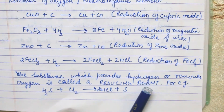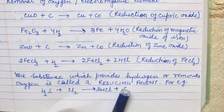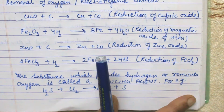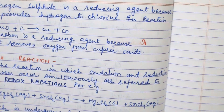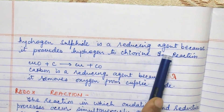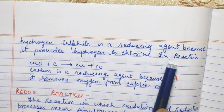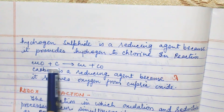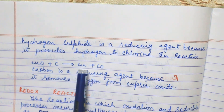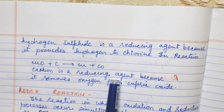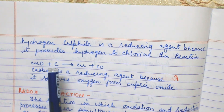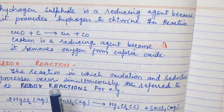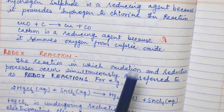The substance which provides hydrogen or removes oxygen is called a reducing agent. For example, H2S and Cl2 give 2HCl and S — hydrogen sulfide is a reducing agent because it provides hydrogen to chlorine. In the reaction of copper oxide and carbon, carbon takes away the oxygen from copper and reduces it. So carbon is the reducing agent — it reduces copper by removing oxygen from cupric oxide.